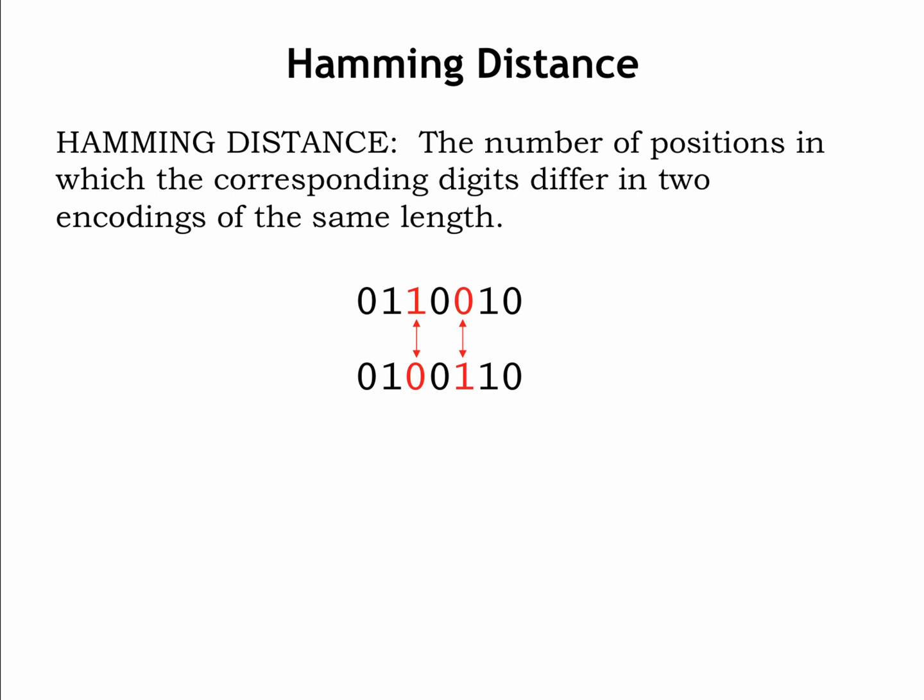For example, here are two 7-bit encodings, which differ in their 3rd and 5th positions, so the hamming distance between the encodings is 2.